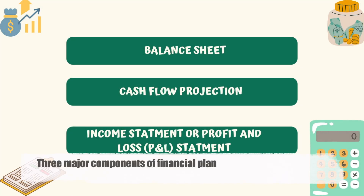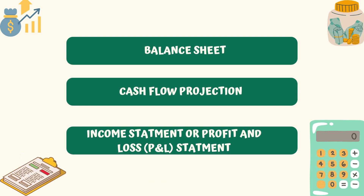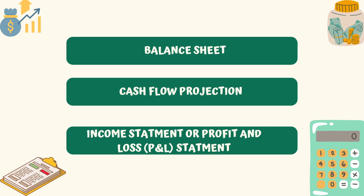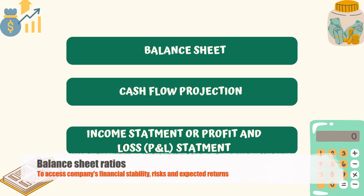A financial plan has three major components: cash flow projection, income statement, and balance sheet. A balance sheet contains details about the company's assets, liabilities, and shareholder equity at any given point of time. It gives an important snapshot of the company's capital structure and financial information, and during fundamental analysis, the balance sheet can be used to calculate financial ratios.